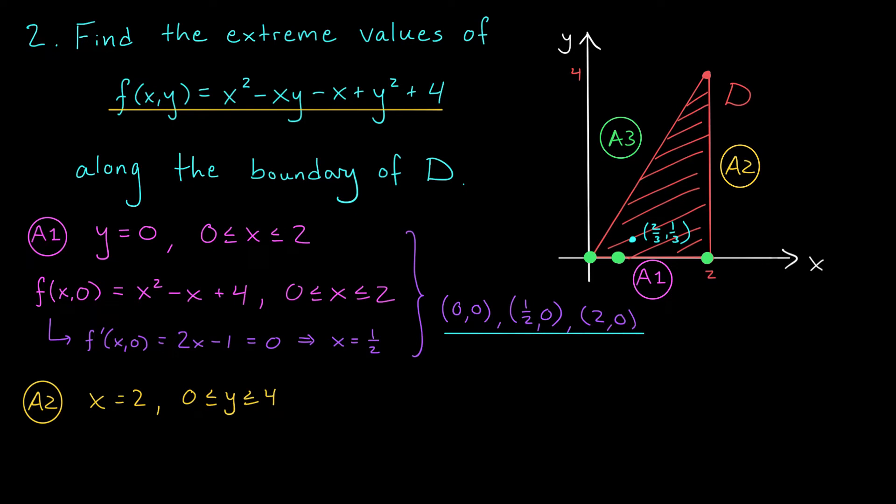What's our function doing along this line? To find out, we're going to plug in 2 for x. We get f(2,y) is 2 squared minus 2y minus 2 plus y squared plus 4. If you simplify this, you should get y squared minus 2y plus 6.